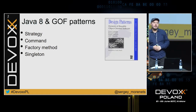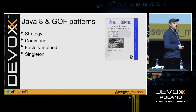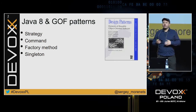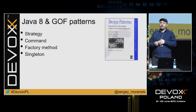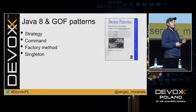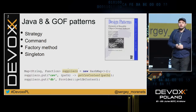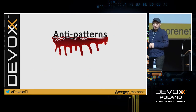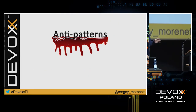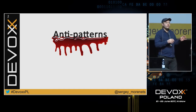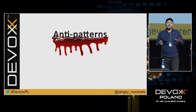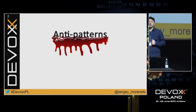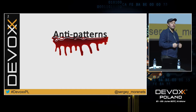I think all of you know and use design patterns. And I think most of you know that in Java 8, a lot of patterns like command, factory, method, and strategy are easier to implement using method references and lambda expressions. However, since a lot of people simultaneously migrated to Java 8, there is some confusion and mis-usage. And that's why anti-patterns appeared, which we'll talk about now.